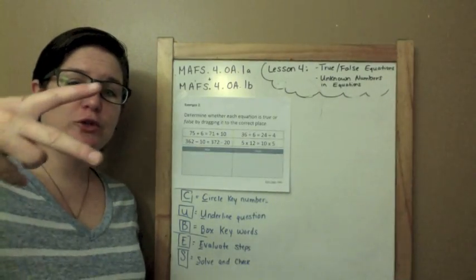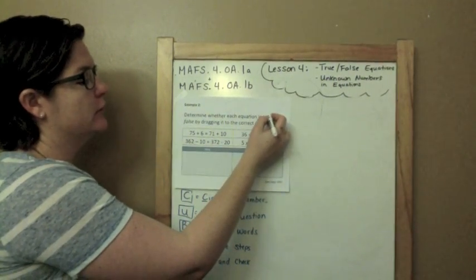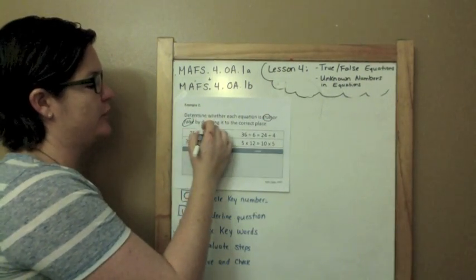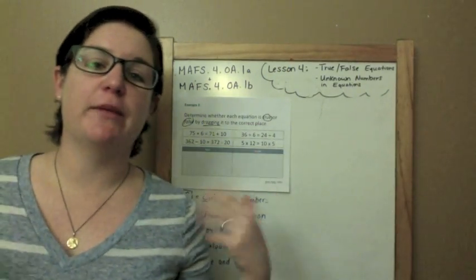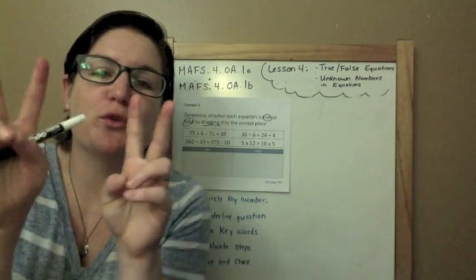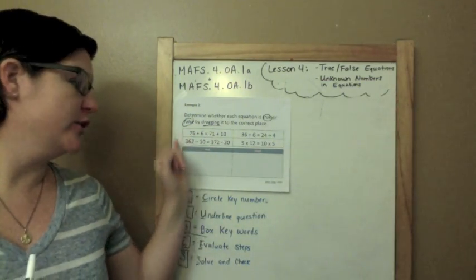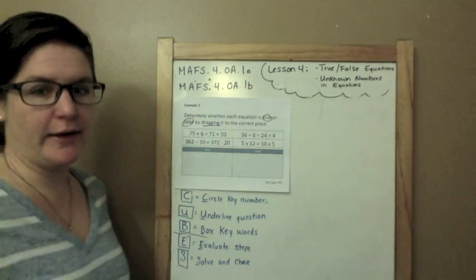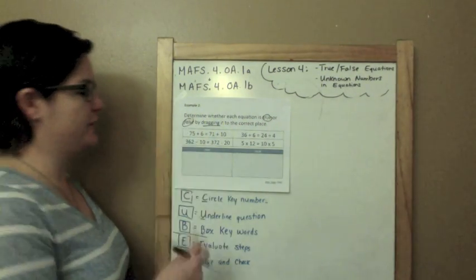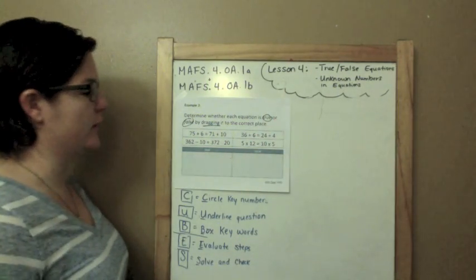Example 2: Determine whether each equation is true or false by dragging it to the correct place. Now this is intended for a computer-type response to drag the answers over, but what we are going to do is just draw arrows and record our answers in the box. So I'm determining whether each one is true or false.